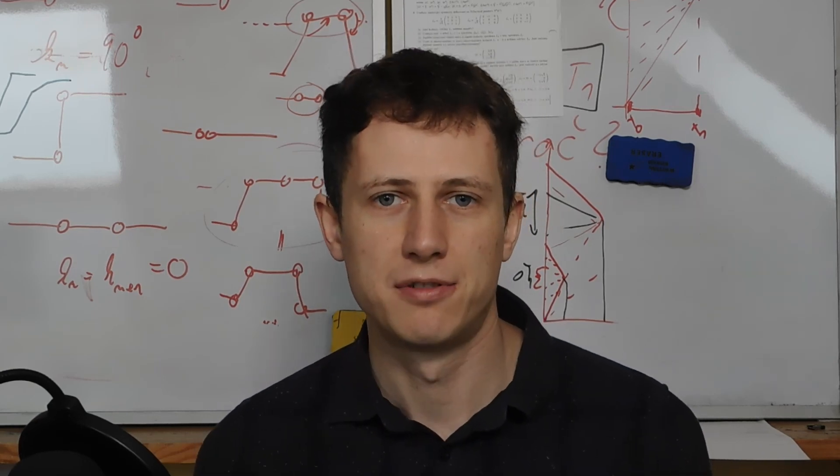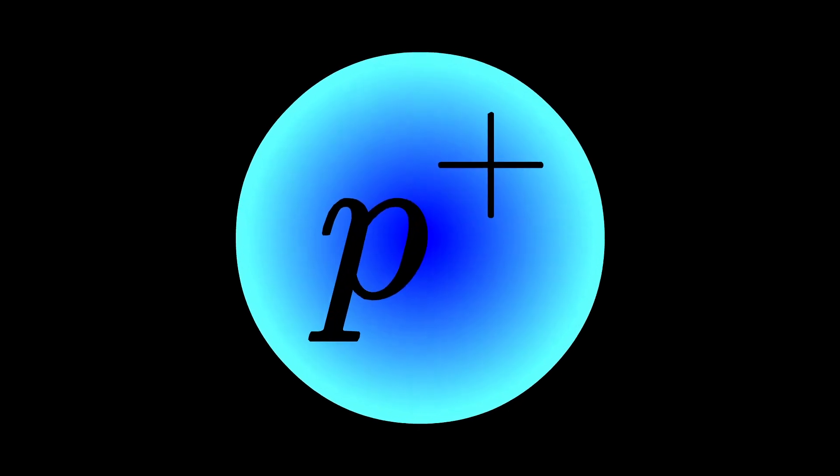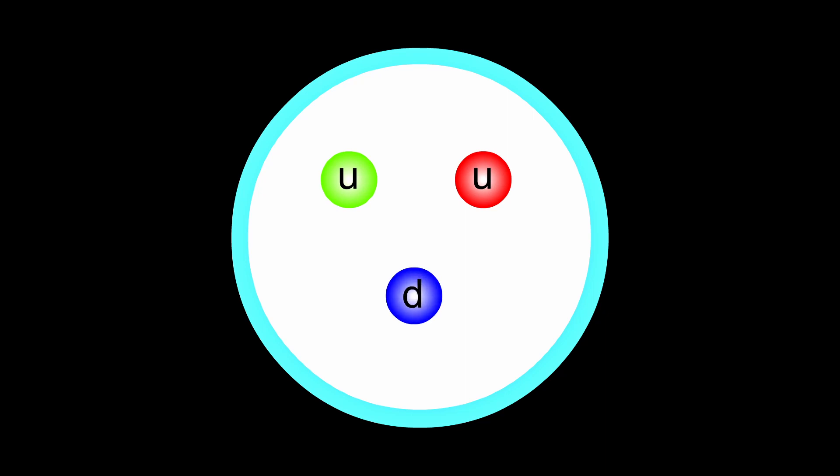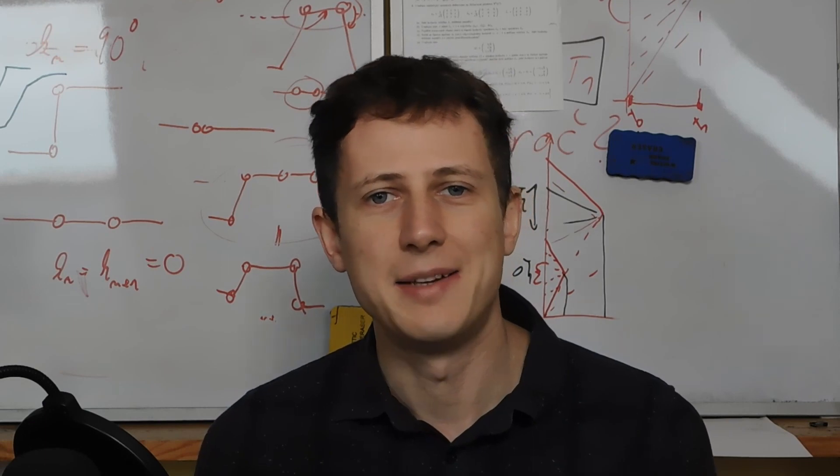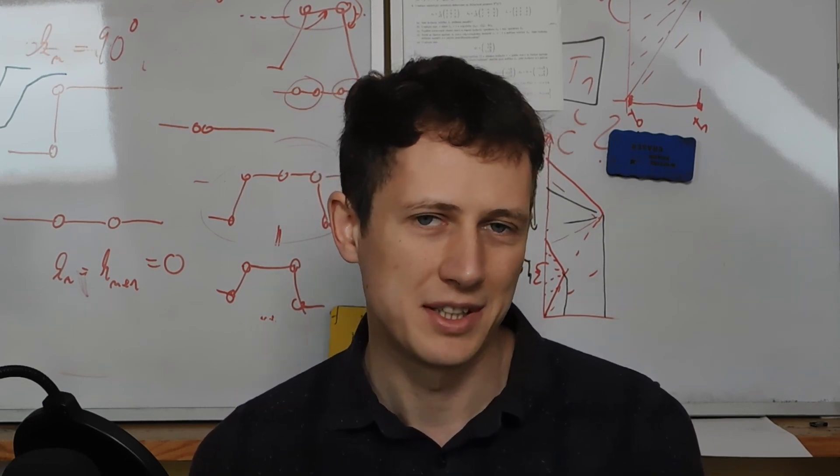So what is a proton actually made of? The classical narrative is simple. It's two up quarks, one down quark, and a bunch of gluons. We know this from 1968, but there is a little problem with this view.